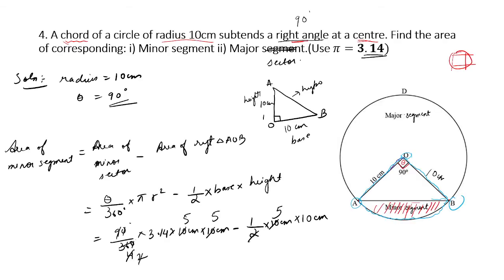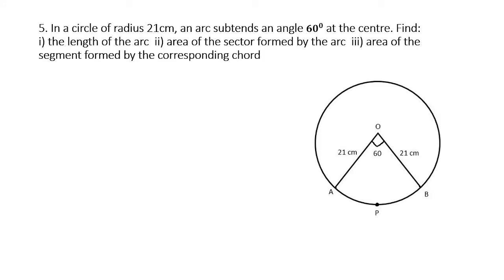Note: I made a mistake writing 'segment' — we found the major sector, not the major segment, so be careful. Moving to question 5: in a circle of radius 21 cm, an arc subtends 60 degrees at the center. Find: first, the length of the arc; second, the area of the sector formed by the arc; third, the area of the segment formed by the corresponding chord.